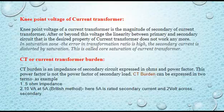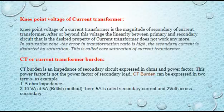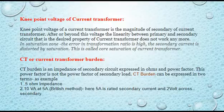In simple terms, the knee point voltage of a current transformer is the magnitude of the secondary voltage beyond which the linearity between the primary and secondary circuit — the desired property of a CT — no longer holds. In the saturation zone, the transformation ratio error is high and the secondary current is distorted by saturation. This is called core saturation of a current transformer.